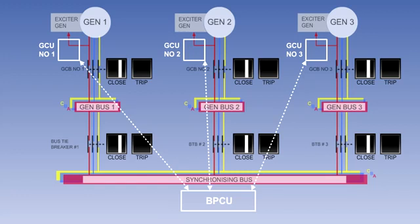The GCUs and the BPCU monitor current flow in each generator and buzz bar. They will isolate a defective generator or faulty buzz bar by opening the appropriate GCBs and BTBs.